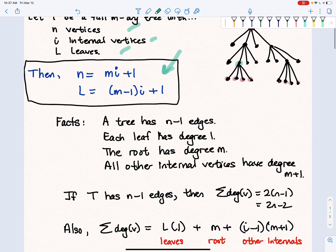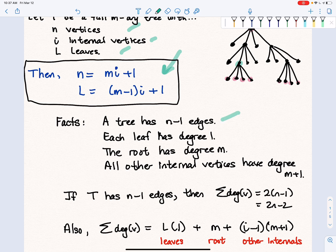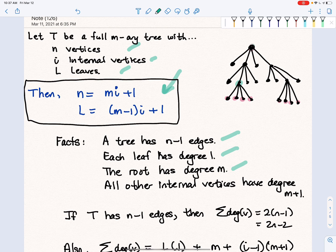So facts that we know: A tree has N minus 1 edges. Each leaf has degree 1. The root has degree M. Let's take a look at our tree up here. This is the root, and it has M children coming out of it because full M-ary means every node either has no children or M children.